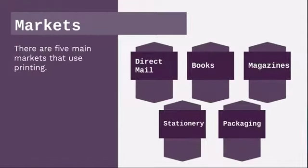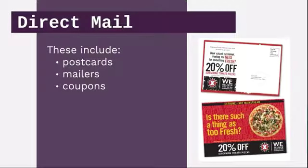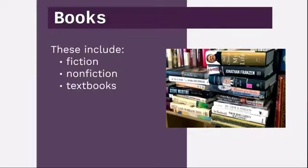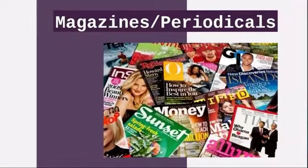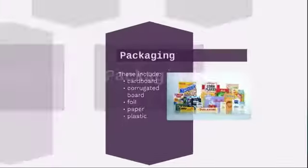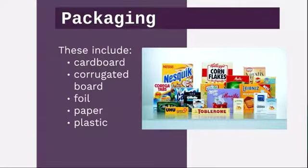There are five main markets that use different printed products. The first is direct mail — customers use postcards, mailers, or coupons delivered to a person's house through the mail. Other customers use books — fiction, non-fiction, or textbooks. There are also magazines and periodicals for different customers depending on their needs. Stationery and forms include business cards, envelopes, letterheads, and any type of form a business would need. And packaging includes cardboard, corrugated board, foil, paper, or plastic.